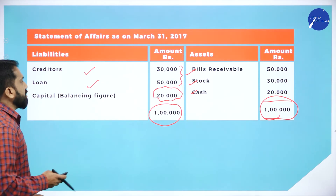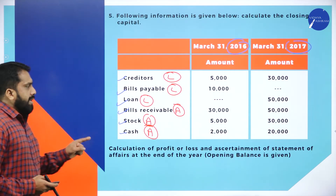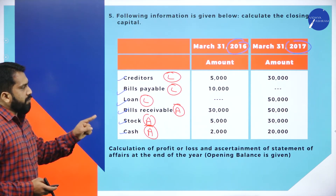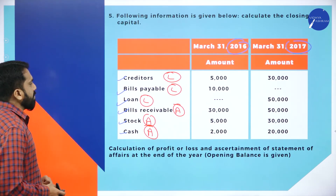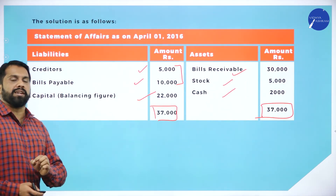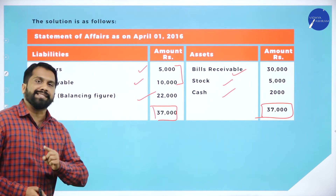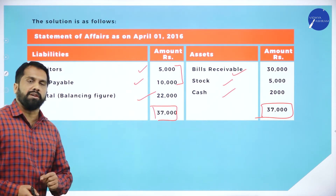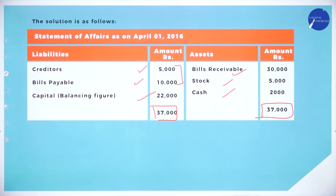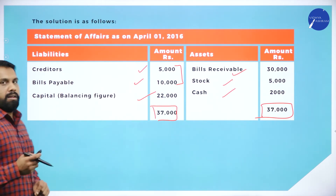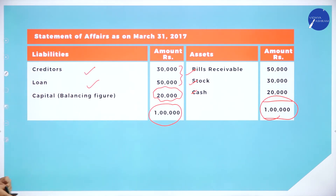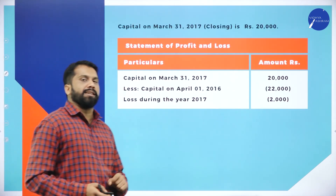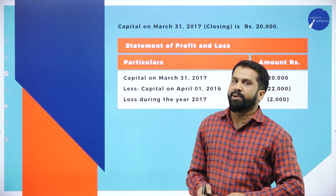Hope there is no doubt. Take a screenshot of this — this will be your question. We have to classify which comes under asset and which comes under liability. Take screenshots of the statement of affairs for 2016 and for 2017. Both balance sheets are done. Now we'll come back to the profit and loss account.